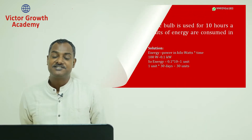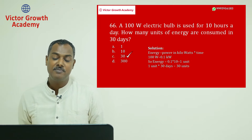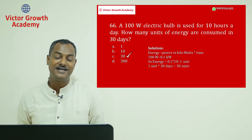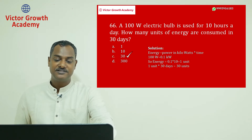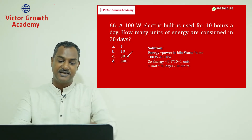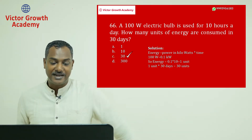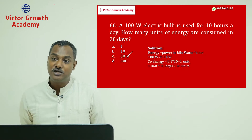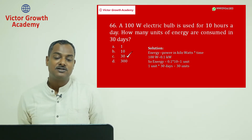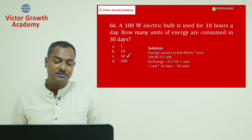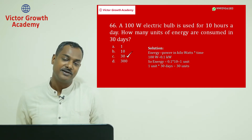Question number 66: a 100-watt electric bulb is used for 10 hours a day — how many units of energy are consumed in 30 days? The answer is C: 30 units. Energy equals power in kilowatts multiplied by time. 100 watts equals 0.1 kilowatts, so energy equals 0.1 × 10 = 1 unit per day, and 1 unit × 30 days = 30 units.